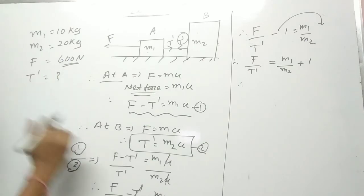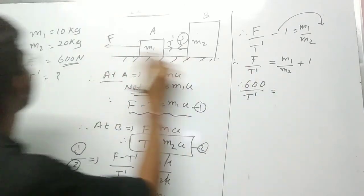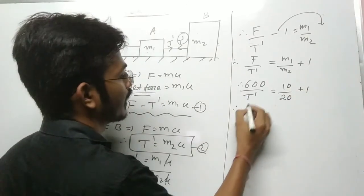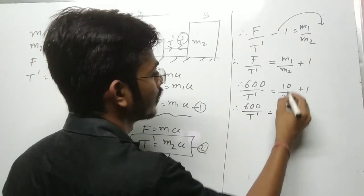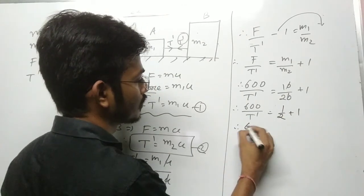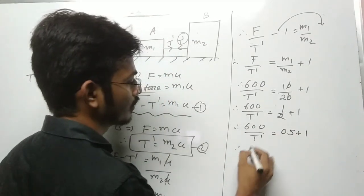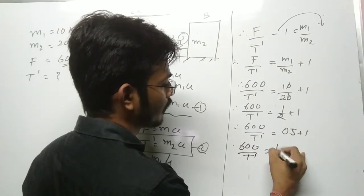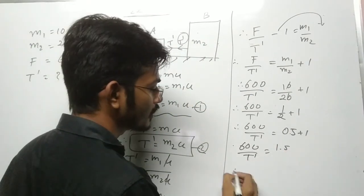Now putting all the values: F = 600, T dash is to be found, m1 = 10 kg, m2 = 20 kg. So 600/T dash = 10/20 + 1 = 0.5 + 1 = 1.5. Therefore T dash = 600/1.5 = 400 Newton. So the tension for Case number two is 400 Newton.